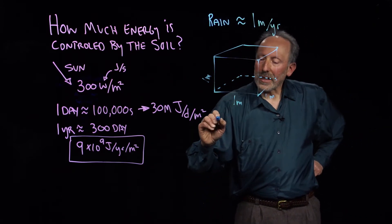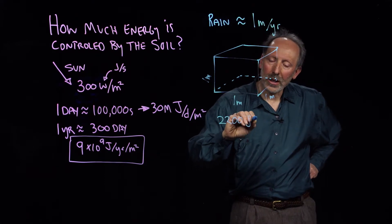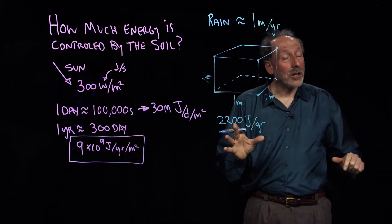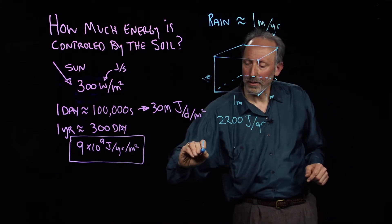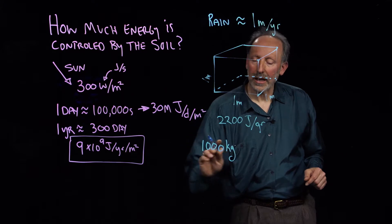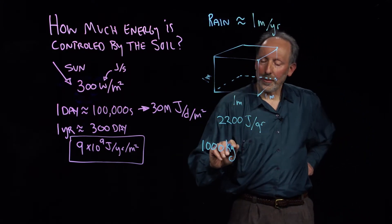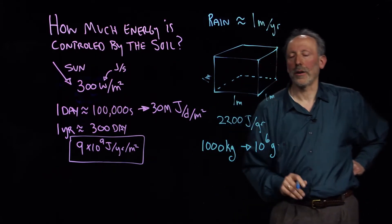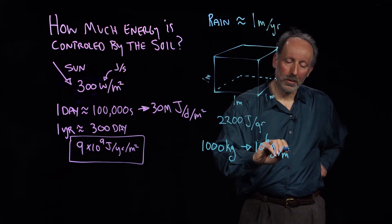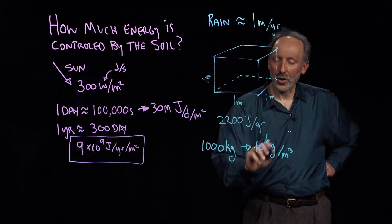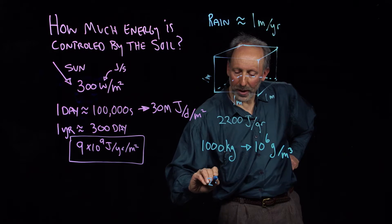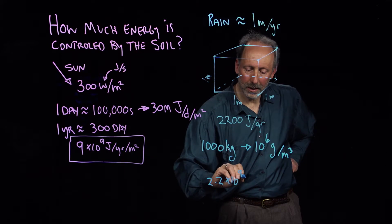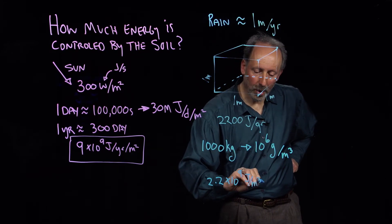And so what we know is it takes 2200 joules per gram to evaporate water. And we know in a cubic meter, that's a thousand liters, or a thousand kilograms in a cubic meter of water. So that's going to mean that there are 10 to the sixth grams of water in our per meter cubed. And so now multiplying the energy per gram times the number of grams, it gives us 2.2 times 10 to the 9 joules per meter cubed of water to evaporate it.